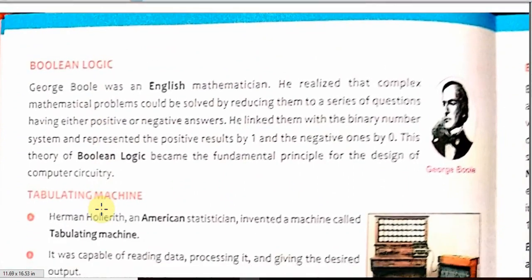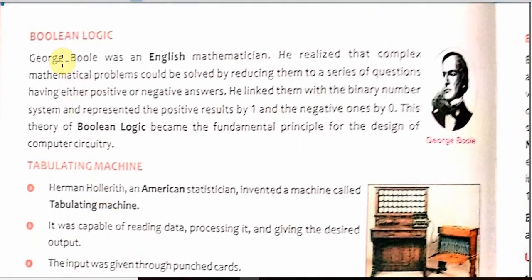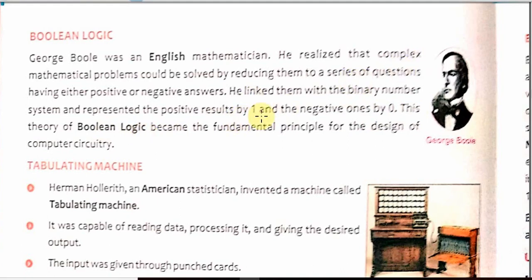Next in our discussion is Boolean logic. George Boole was a British mathematician. He realized that complex mathematical problems could be solved by dividing them into smaller parts, and these questions have a positive or negative answer — meaning the answer will be either yes or no. He linked them with binary numbers and represented the positive by 1 and negative by 0. This is called Boolean logic, and we use Boolean logic today also. One means positive, meaning yes, and 0 means no.